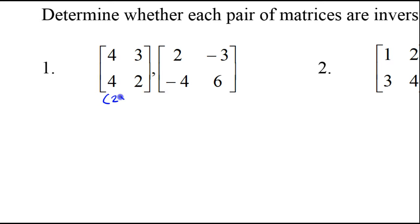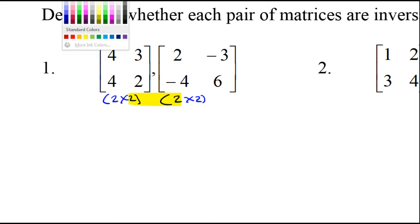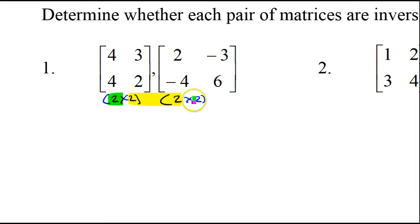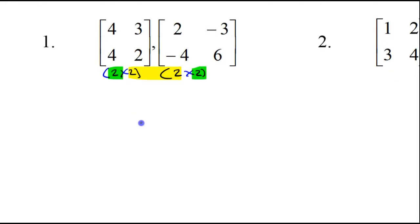This is a 2×2 matrix, and this is also a 2×2 matrix. We know that this multiplication is possible because the inner dimensions are the same. The outer dimensions tell us the dimensions of our final answer, so our final answer will be a 2×2 matrix. Let's go ahead and set up an empty 2×2 matrix in which we will do our calculations.